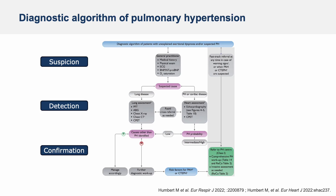You can see here the diagnostic algorithm from the last European guidelines on pulmonary hypertension. This algorithm includes three steps. The first one is suspicion, mainly based on symptoms and clinical signs. The second step is detection, based on both lung and heart assessment and it includes echocardiography. And finally the third step is confirmation of the diagnosis of PH using right heart catheterization.